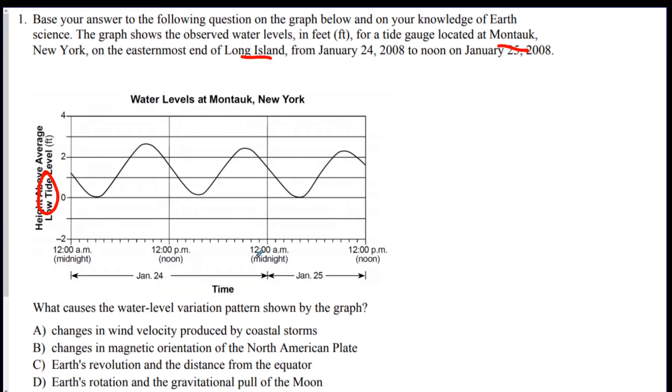The day and a half, the day is caused by the rotation of the Earth, and the tides are caused by the gravity from the Moon. So your answer is D.